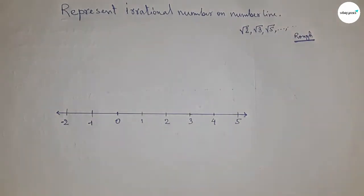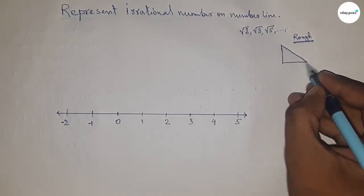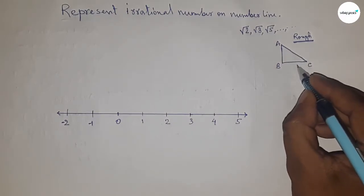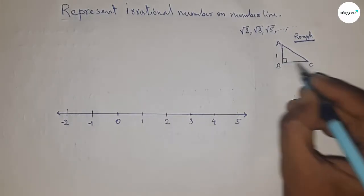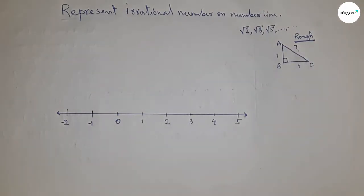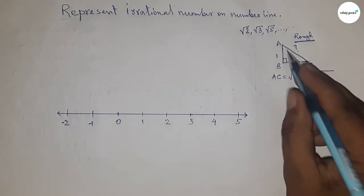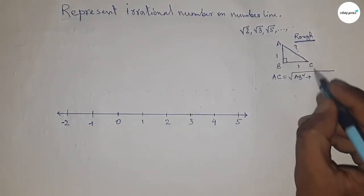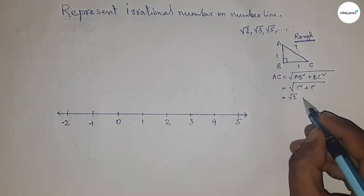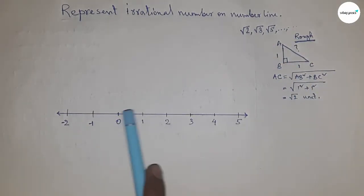First, discussing the concept for root 2. If there is a right angle triangle ABC with base one unit and height one unit, then what is the hypotenuse? By the Pythagorean theorem, AC equals root over AB squared plus BC squared. Putting in the values, we get root 2 units. So we obtain root 2 this way.